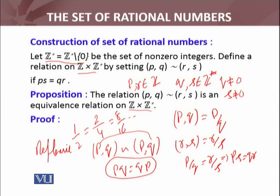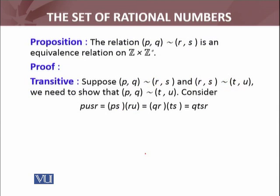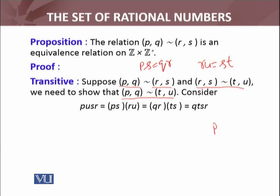This relation is reflexive. The symmetric property can be verified similarly. Now I will show the transitive property. If (P,Q) is related to (R,S), it means PS = QR by definition of the relation. And if (R,S) is related to (T,U), it means RU = ST. Then I have to show that (P,Q) is related to (T,U), which means showing that PU = QT.